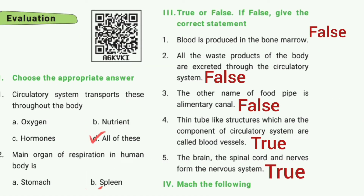Then true or false. First one: blood is produced in the bone marrow. The answer is false. Second one: all the waste products of the body are excreted through the circulatory system. The answer is false. Then third one: the other name of food pipe is alimentary canal. The answer is false.